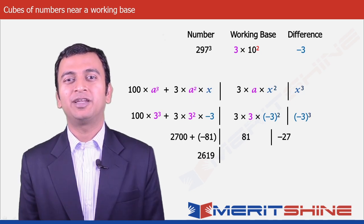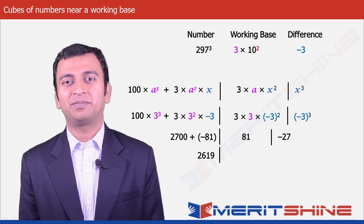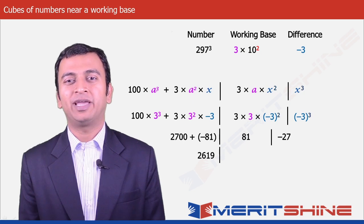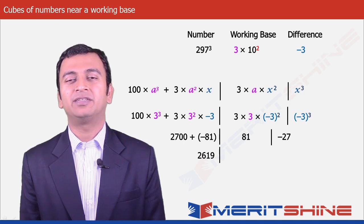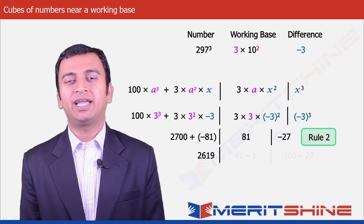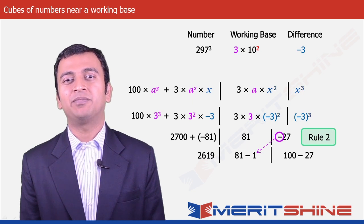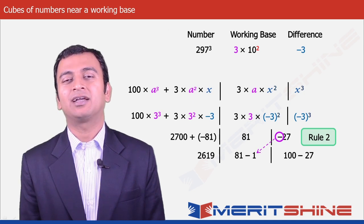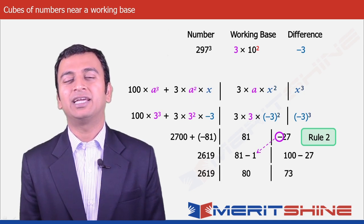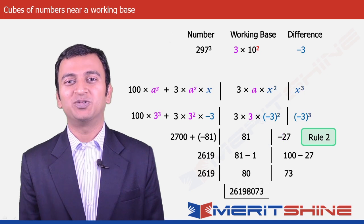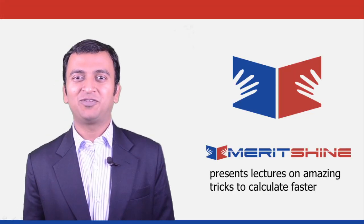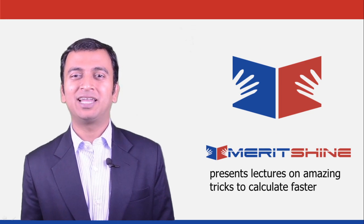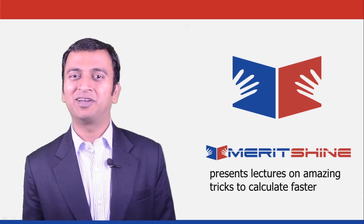As per Rule 2, none of our answer parts can be negative. So to make minus 27 positive, it will borrow 1 from 81, making it 81 minus 1 = 80, and the third part becomes 100 minus 27 = 73. Clubbing all three gives our final answer as 26,198,073. Thanks for watching and subscribe to our channel for updates on new releases.